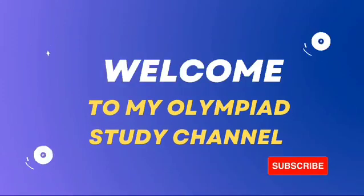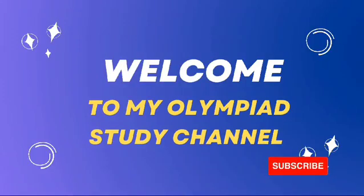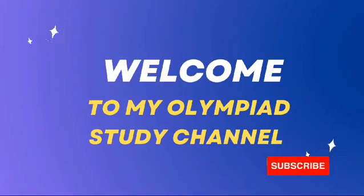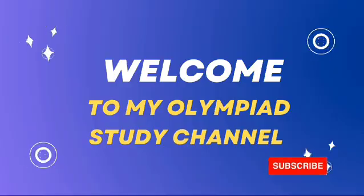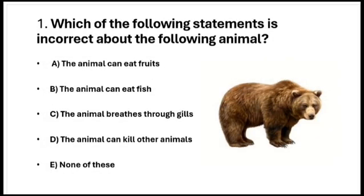Welcome to my Olympia study channel. Today we are learning Science Olympia class 3. Question number 1. Which of the following statements is incorrect about the following animal? Option A.